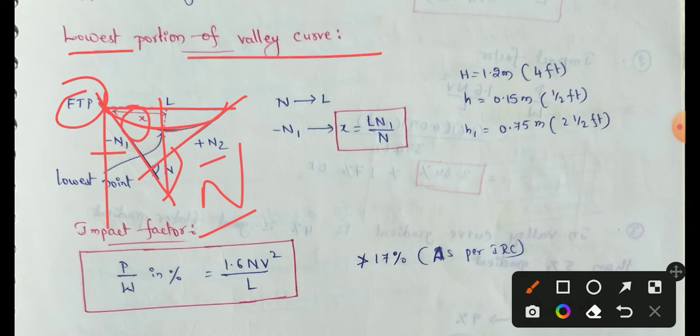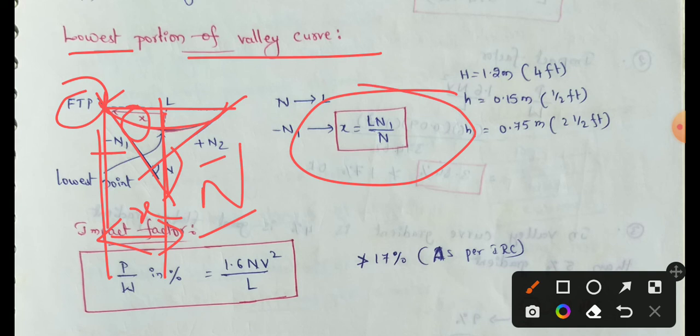X indicates the lowest portion of the valley curve. X is the location from the initial tangent. The formula is X = L × N1 / N. X is the location from initial tangent, N1 is the gradient from the initial tangent, and L is the length of curve.